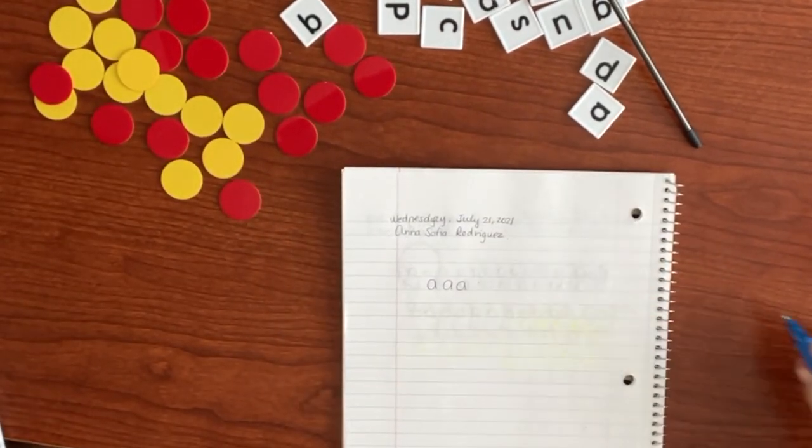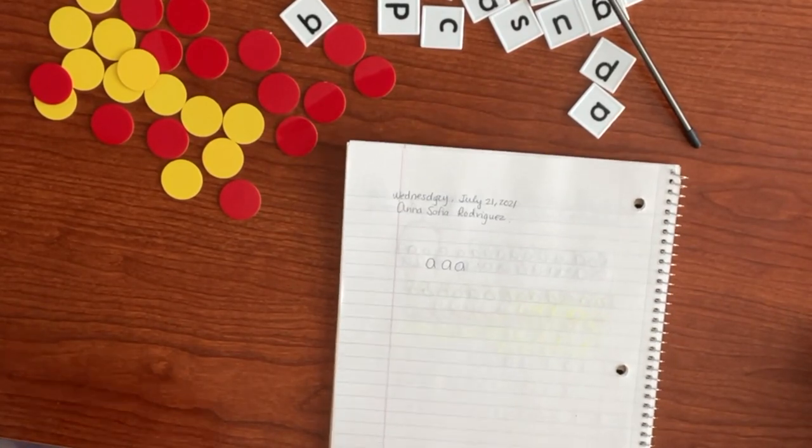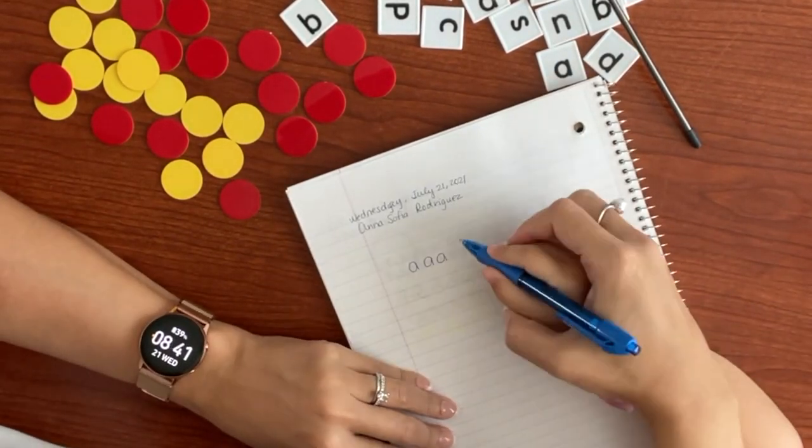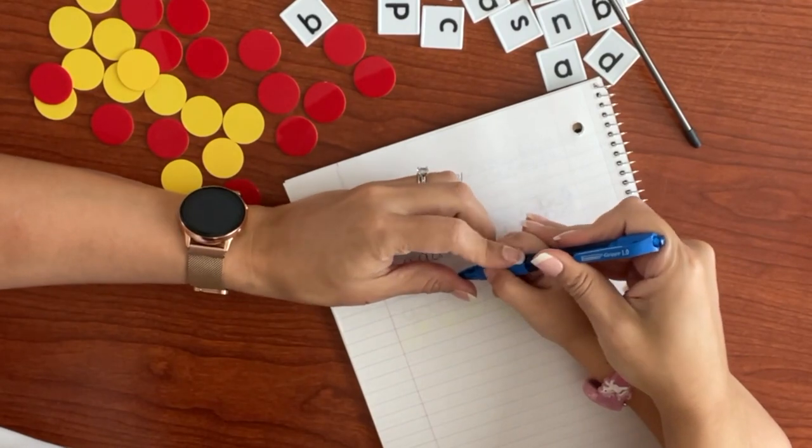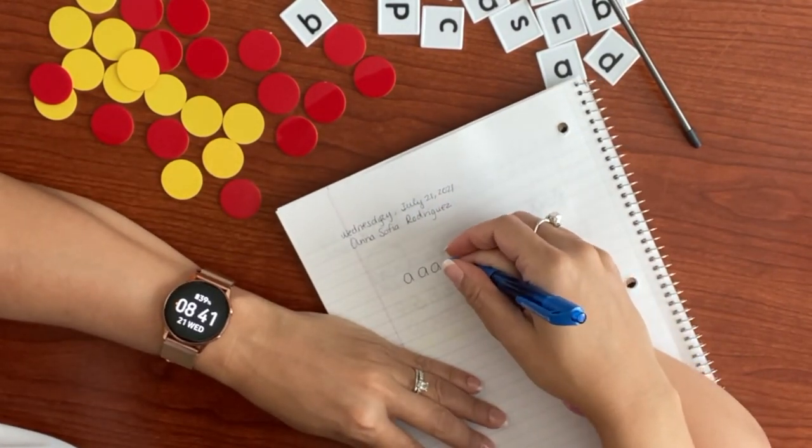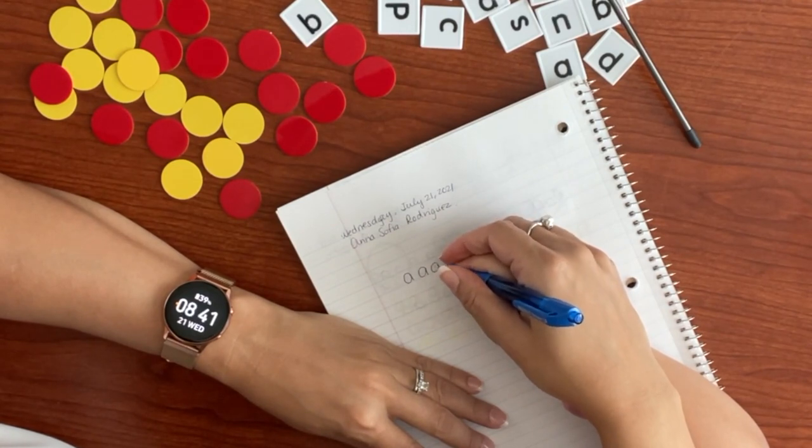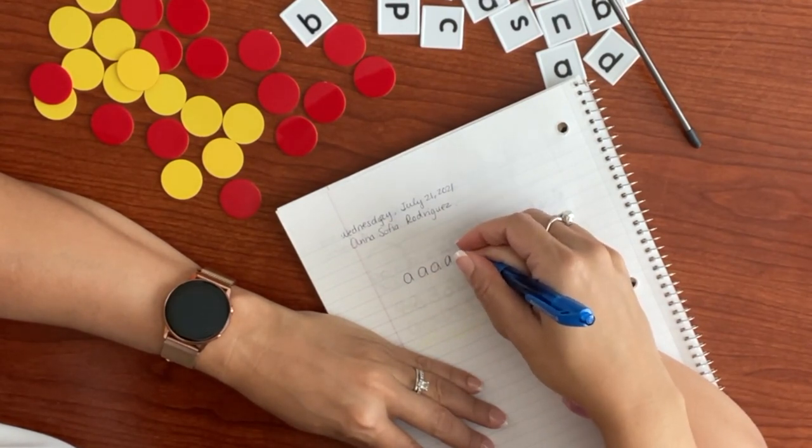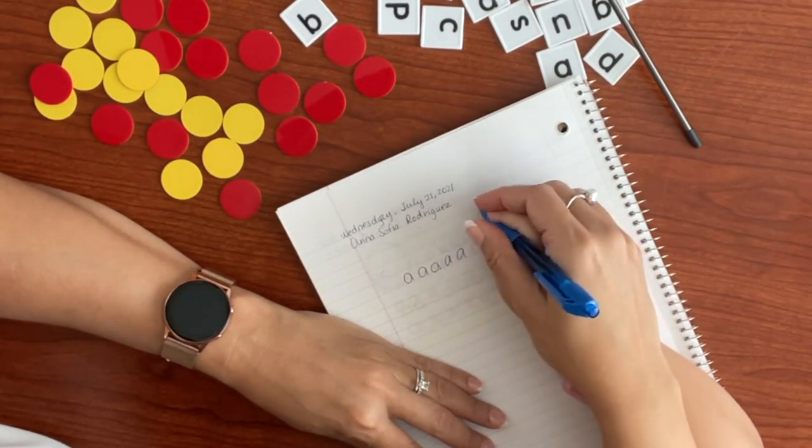When you write, posture is very important. So sit up straight. You can have your paper a little bit like this. You want your pen down a little bit more like this. Perfect. And so you're going to start at two o'clock.